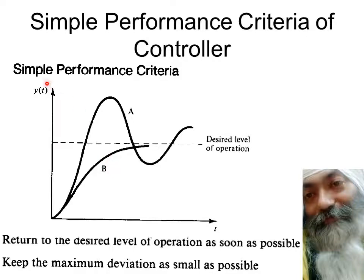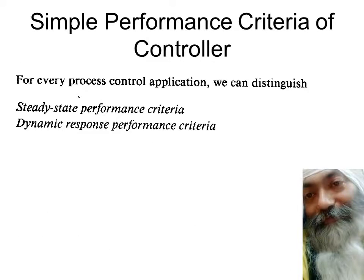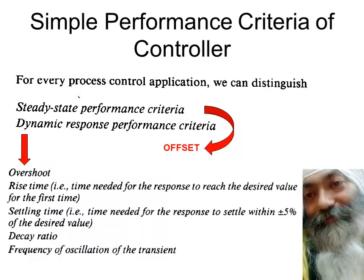But what if your requirement is that it should be neither oscillatory like A nor sluggish like B? In that case you have to go in for some third type, or the same type with different tuning — different values of kc, tau_i, and tau_d. So we need a performance criterion that defines what is meant by 'neither oscillatory nor too sluggish.' For every process control application, we have two types of criteria: steady-state performance criteria and dynamic response performance criteria. Steady-state criteria primarily means offset.